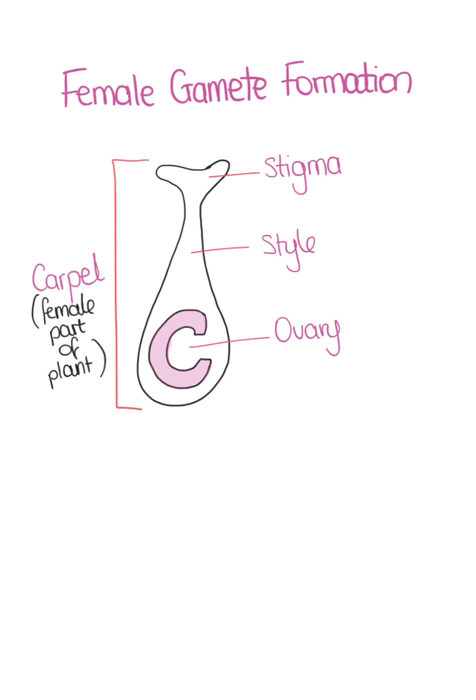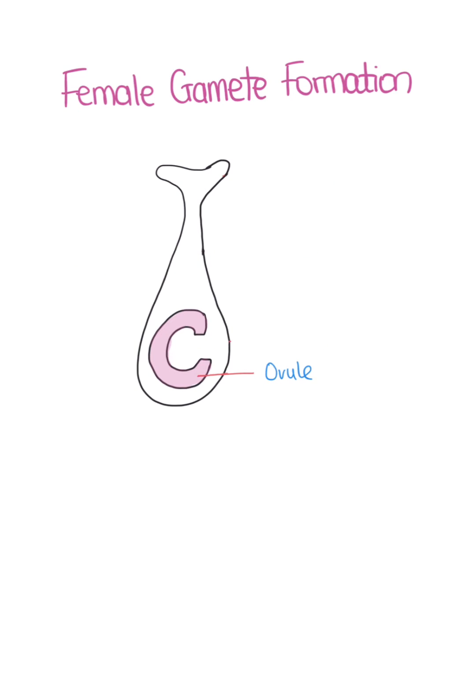The ovary contains ovules which produce eggs as a result of meiosis. The lower part of the ovule contains a megaspore mother cell, which is a diploid cell.